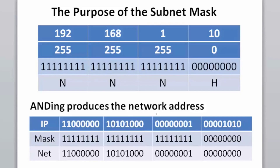This ANDing process is a logical process: a true and a true makes a true; a false and a true makes a false. If we logically AND the IP address with the subnet mask, we get the network address. So 192.168.1.10 logically ANDed with 255.255.255.0 produces the 192.168.1.0 network.